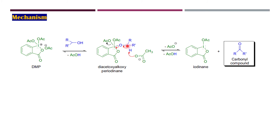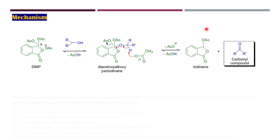The acetate acts as a base and takes up the proton, and the C-H bond is cleaved, which leads to the formation of the C=O bond, releasing the ketone molecule. One acetate is also released, and the iodine is formed along with the release of the desired carbonyl compound product.